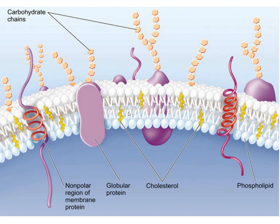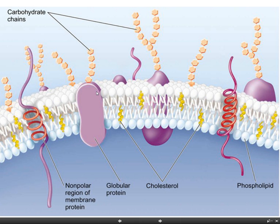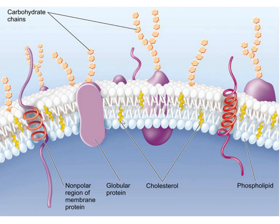Why would you need the membrane to be more or less fluid? The movement of proteins through the fluid can be important, but it's also about the stability of the membrane. For instance, if you look at fish in different climates and at different temperatures: fish that live in very cold waters have less cholesterol so that the membrane stays more fluid, and fish that live in tropical and warm waters have more cholesterol to prevent the membrane from becoming too fluid. So the amount of cholesterol helps to regulate the stability of the membrane and membrane fluidity.